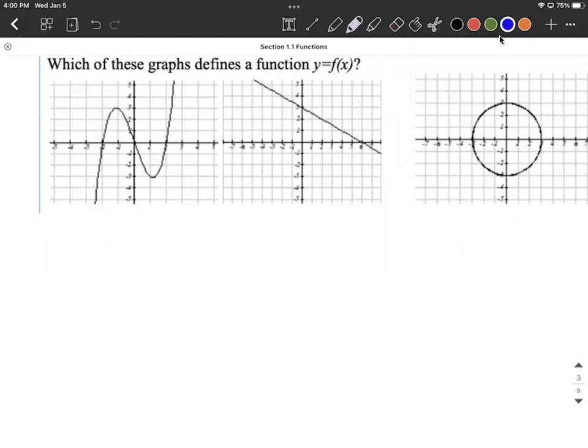So what the vertical line test tells us is if you can find anywhere on the graph where if you draw a vertical line and it intersects the graph in more than one place, then that means it's not going to be a function. If you can't find one of those vertical lines that intersects more than once, then it is going to be a function.